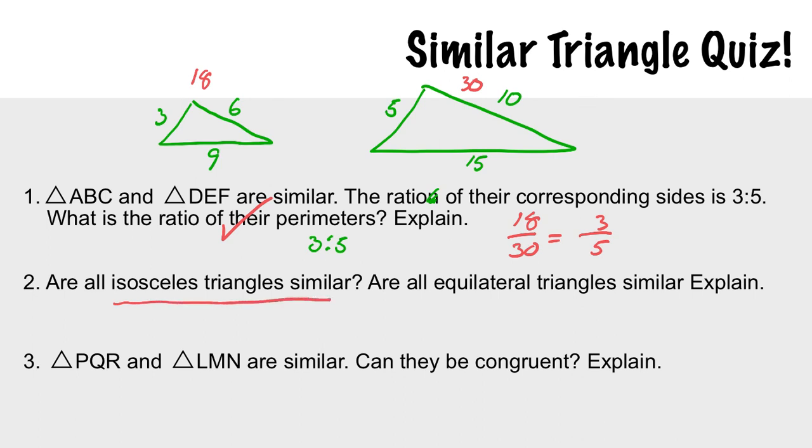Are all isosceles triangles similar? Are all equilateral triangles similar? Well, equilateral triangles: because all equilateral triangles have similar angles—they're all going to be 60 degrees—this is a big yes. Isosceles triangles, slightly different story. Isosceles triangles have two side lengths that are the same, but if I make this base really, really long, you should be able to see that those are not going to be similar triangles because the angles are completely different. So not all isosceles triangles are similar.